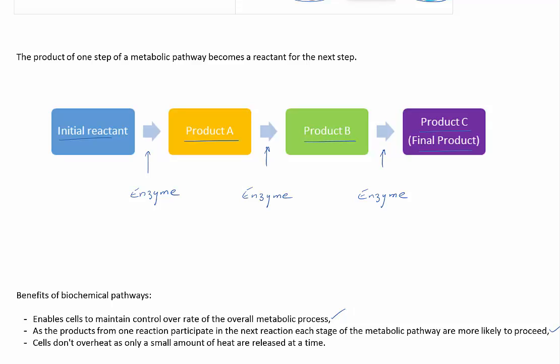Secondly, biochemical reactions are reversible under certain conditions. It is important that products are removed from the cells so that they do not build up and slow down or reverse biochemical reactions. Because the products of one reaction participate in the next reaction, each stage of the metabolic pathway are more likely to proceed.